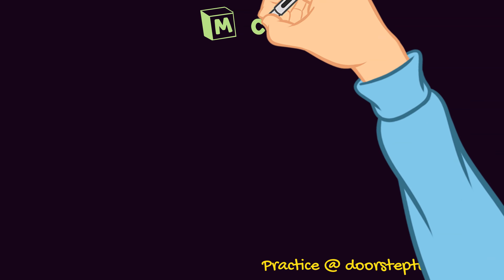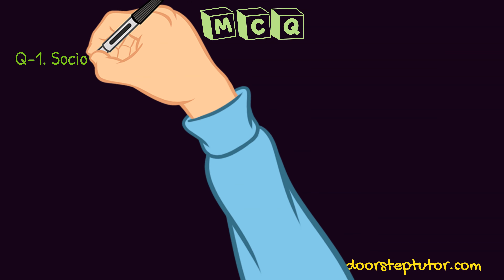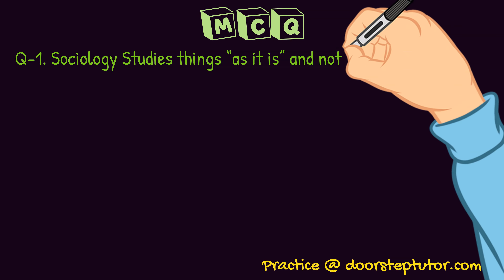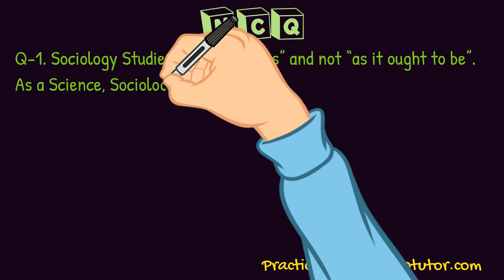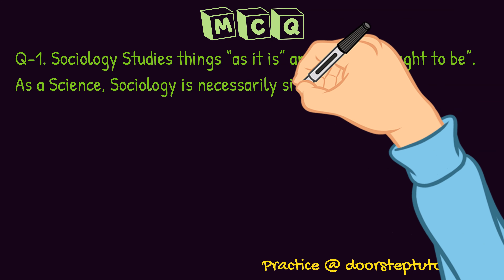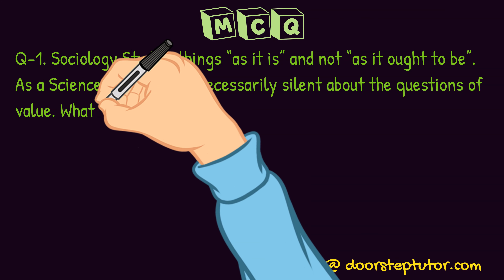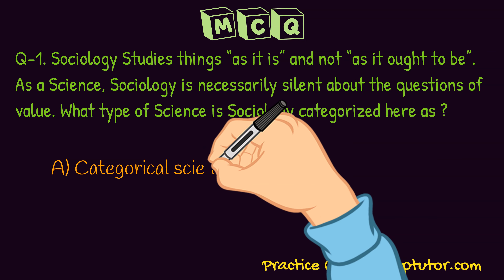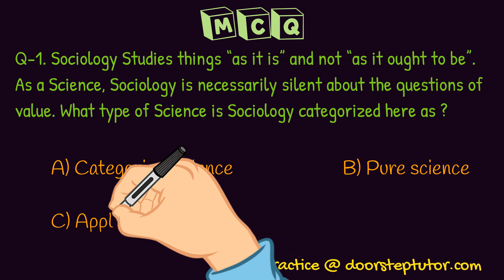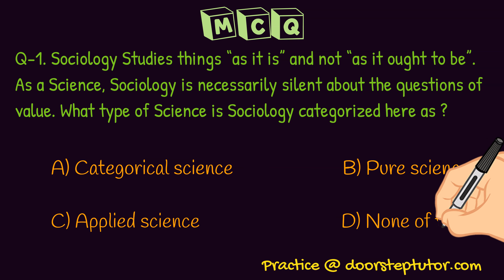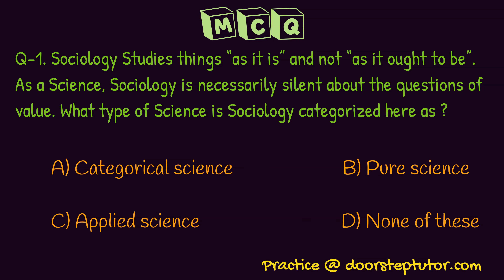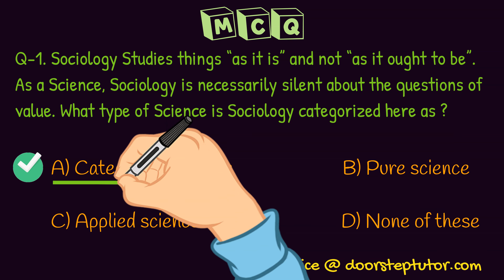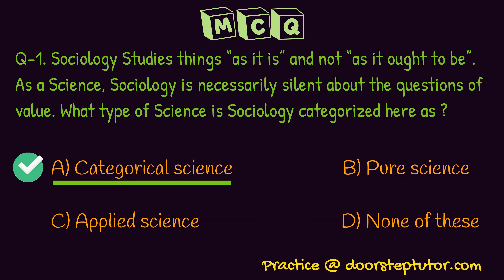Let us discuss a question now. First question: sociology studies things as it is and not as it ought to be. As a science, sociology is necessarily silent about the questions of value because we read that it is value-free. What type of science is sociology categorized as here? This is categorical science — not pure or applied science, but categorical science.